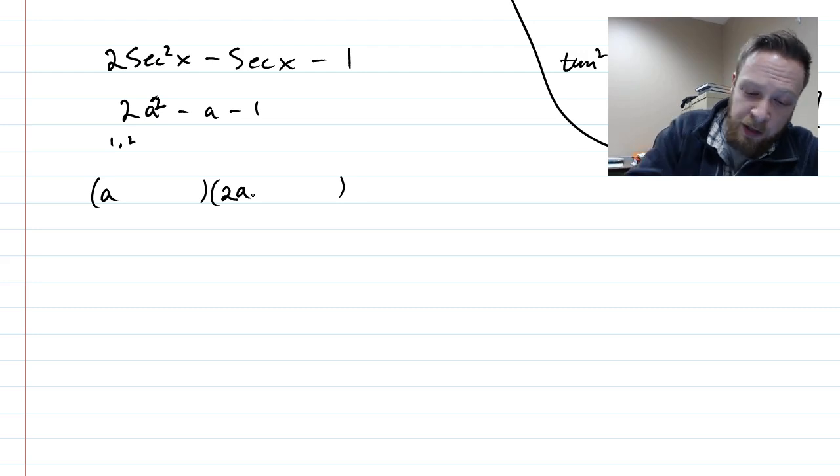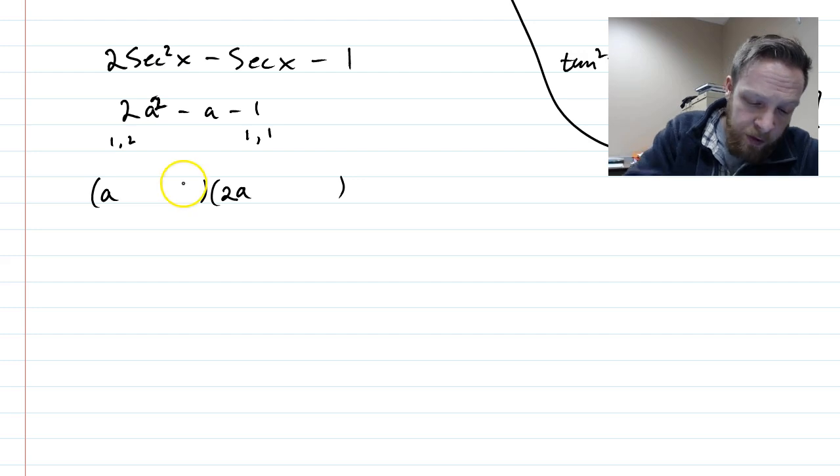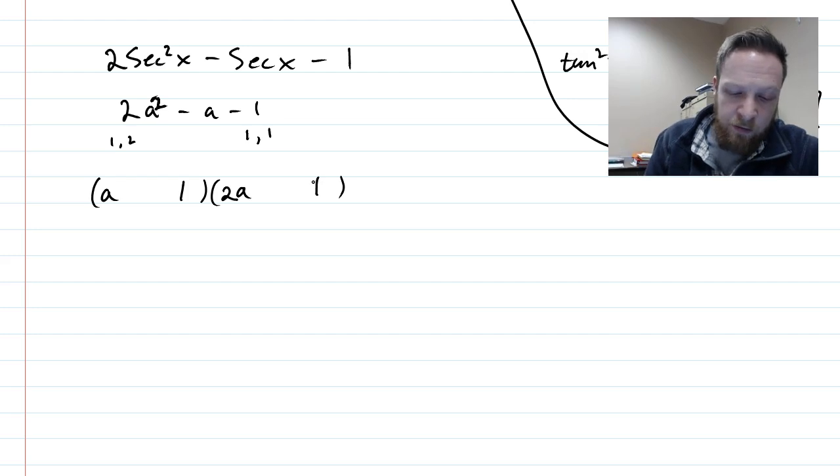And then the numbers that will multiply to 1 are 1 and 1. And 1 has to be negative. So the only thing that you have to worry about is which one of those has to be negative. And so I'm going to put a 1 and a 1 here. And in my head, I'm foiling this out.